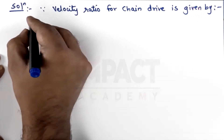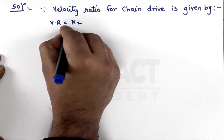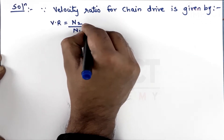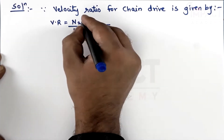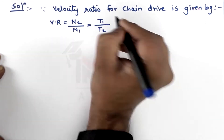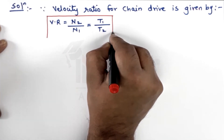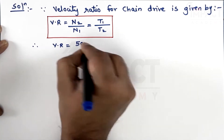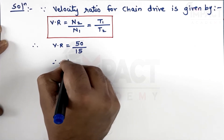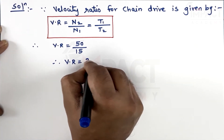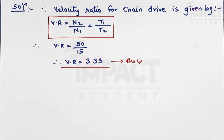The velocity ratio formula for a chain drive is: velocity ratio = speed of driven sprocket / speed of driving sprocket = n2/n1. Since speed is inversely proportional to the number of teeth, this equals t1/t2. With t1 = 50 and t2 = 15, the velocity ratio comes out to be 3.33. That is the first answer.